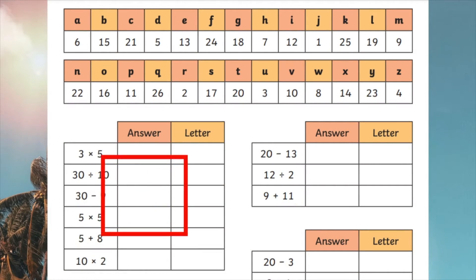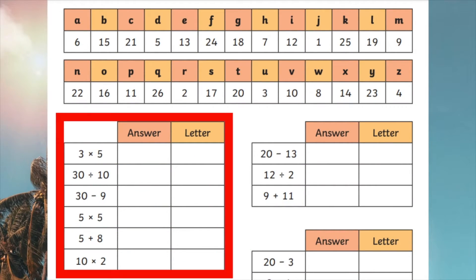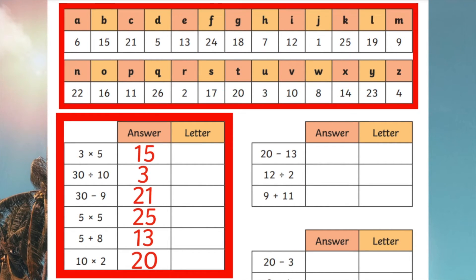All your children need to do is simply work out the maths calculations in the answer boxes, and once they've found the answer, this will match up to a letter in the chart at the top of the worksheet. They can then find what word is hidden behind those calculations.